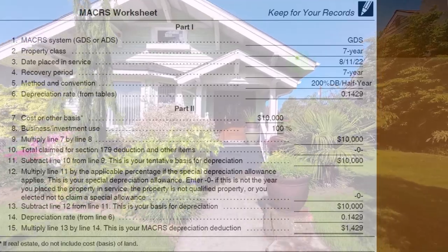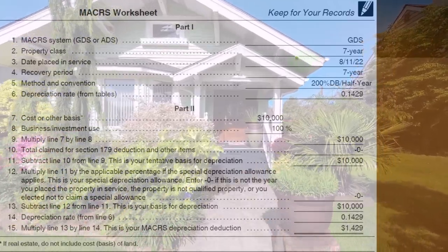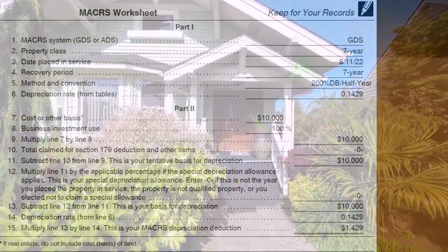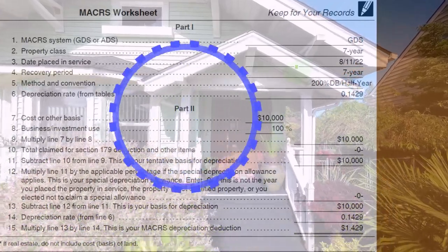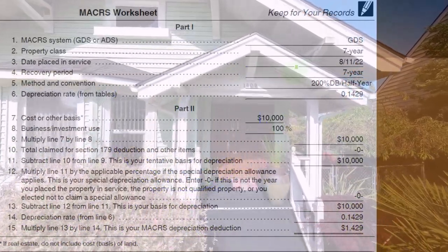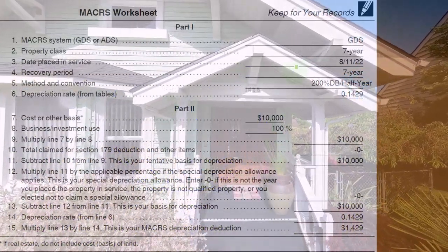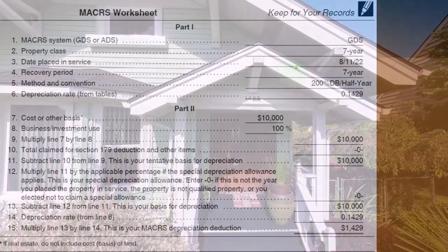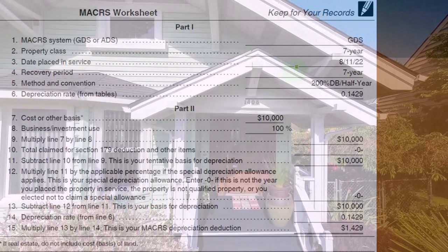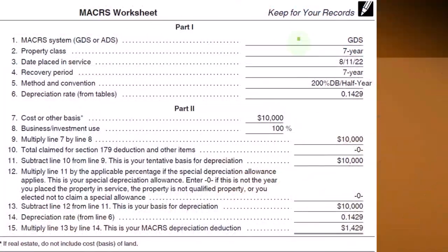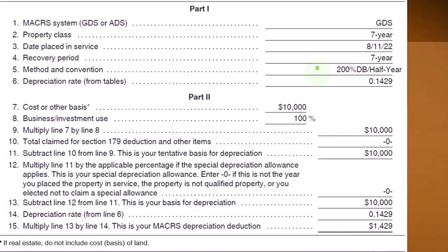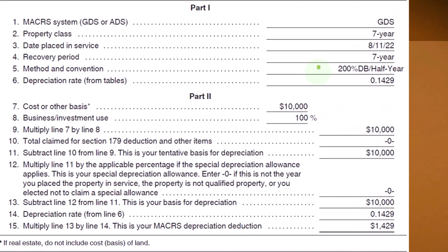We know the date placed in service because that's usually the date we bought it, but it might be a little bit after — usually it's the date we bought. Recovery period: seven years. We know that because it's seven-year property under the GDS system, and the method is going to be 200% or double declining balance with a half-year convention.